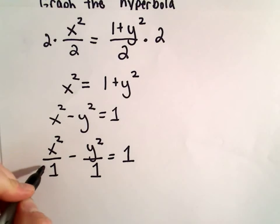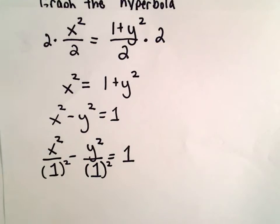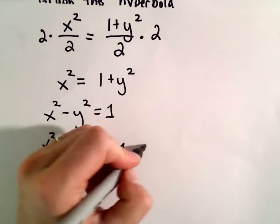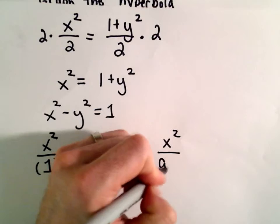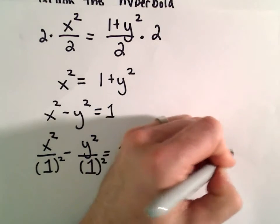And really we could even write 1 as 1 squared and, again, 1 as 1 squared. So now we have it in this form, x squared over a squared minus y squared over b squared equals 1.